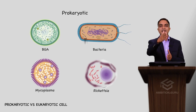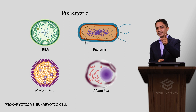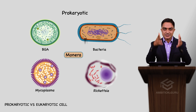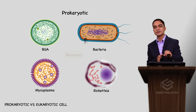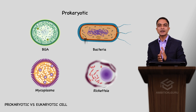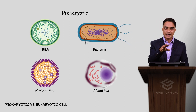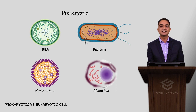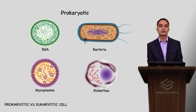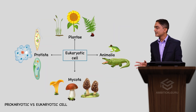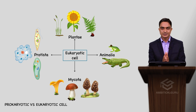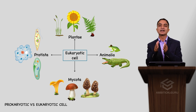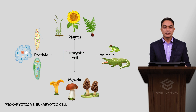As examples: organisms in Kingdom Monera are prokaryotes — including mycoplasma, bacteria, blue-green algae, Chlamydia, and Rickettsia. Eukaryotes include organisms in the plant kingdom, animal kingdom, Mycota, and Protista — all of these contain eukaryotic cells.